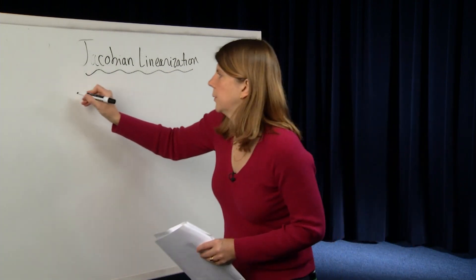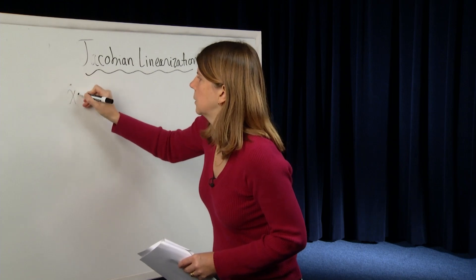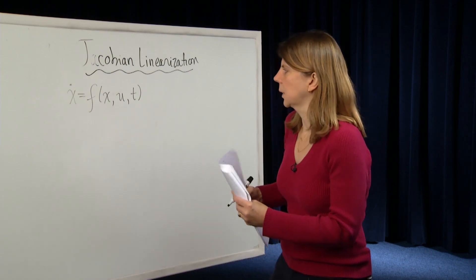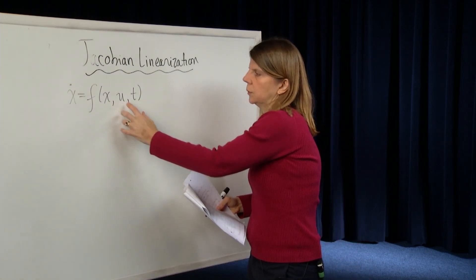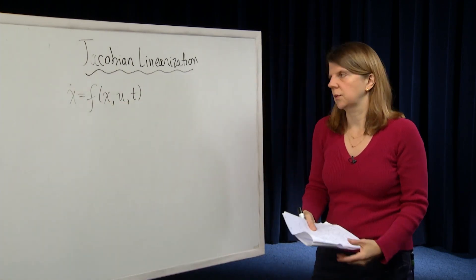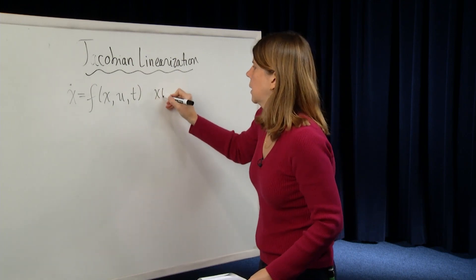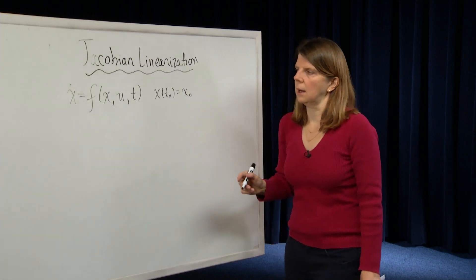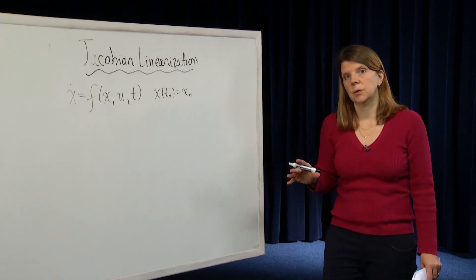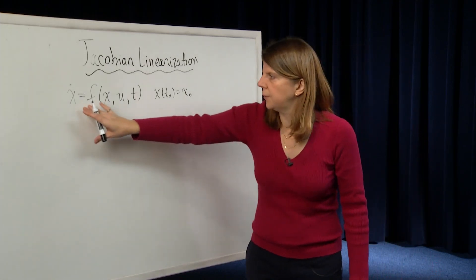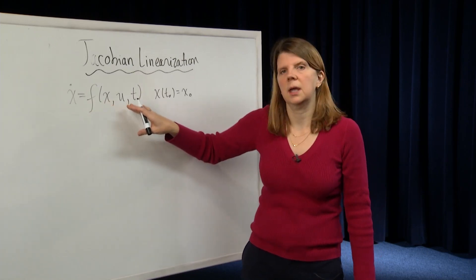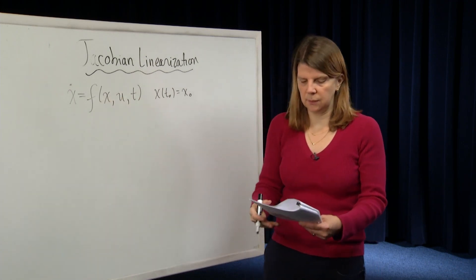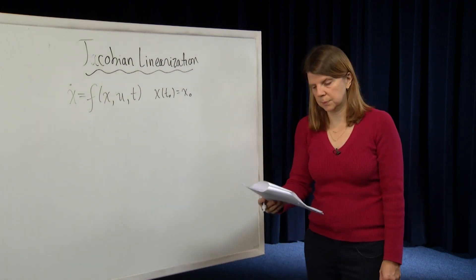Suppose we start with a general system — it could be nonlinear. Here x is the state, u is an input, and it could be possibly time-varying, with some initial condition. The linear systems we've been working with so far are a special case of this general category, where f(x, u) equals A times x plus B times u.